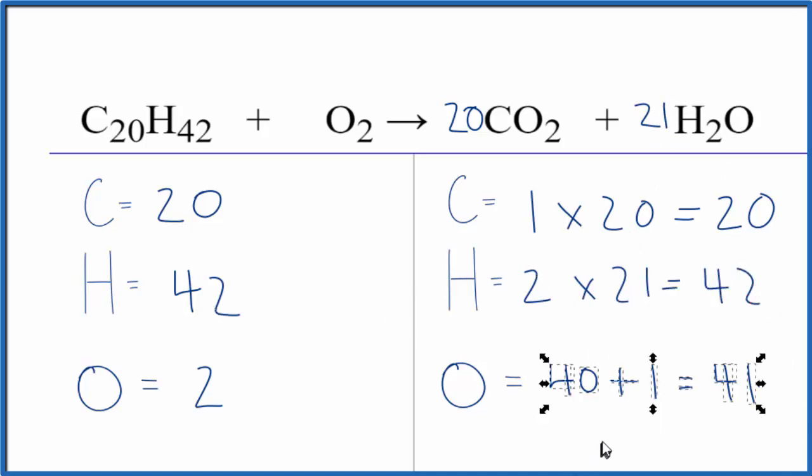But we need to update the oxygens. We have 2 times 20, so 40, plus 1 times 21. Now we have 61 oxygen atoms.